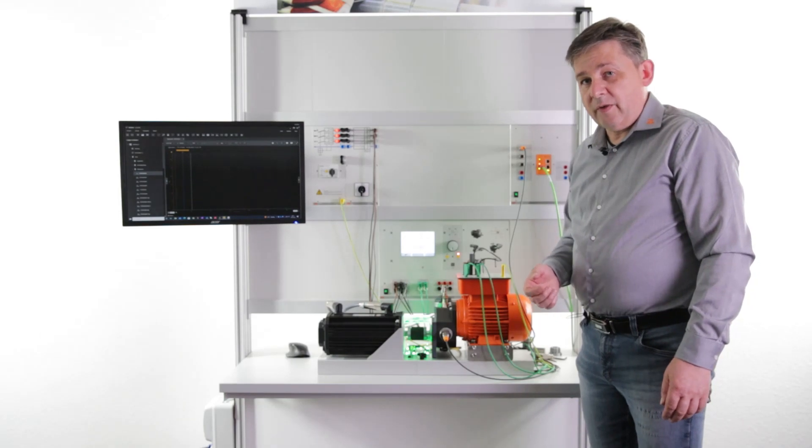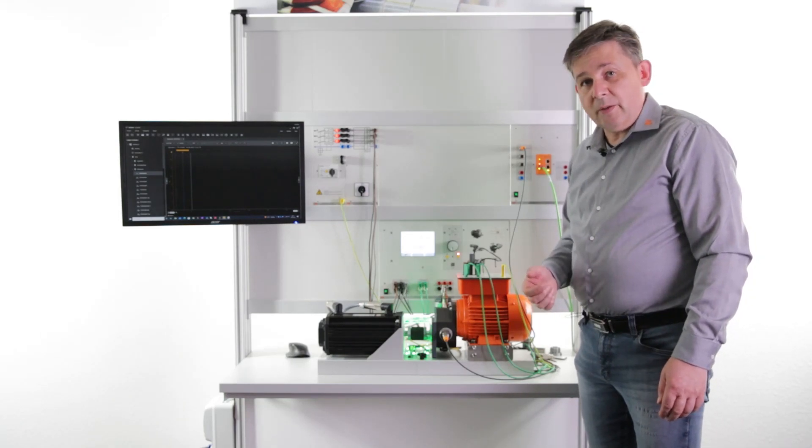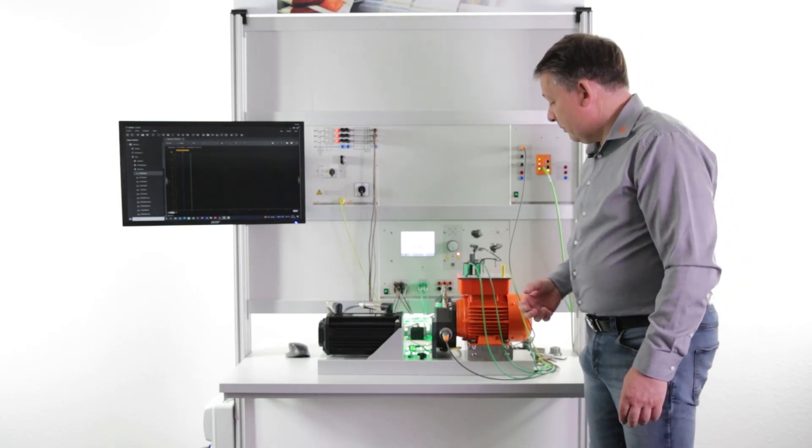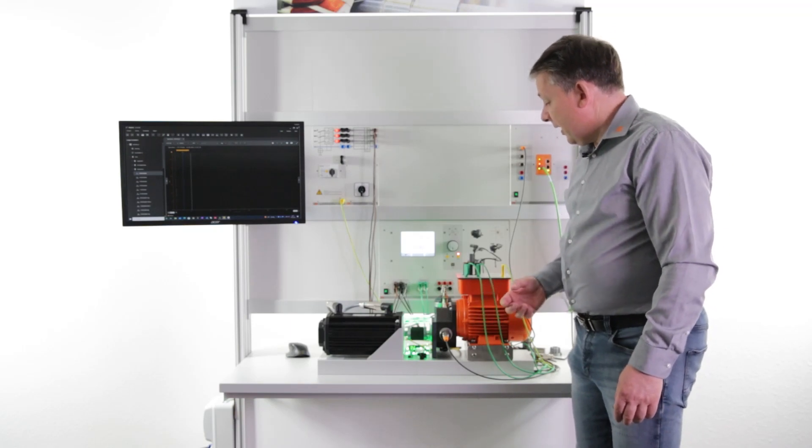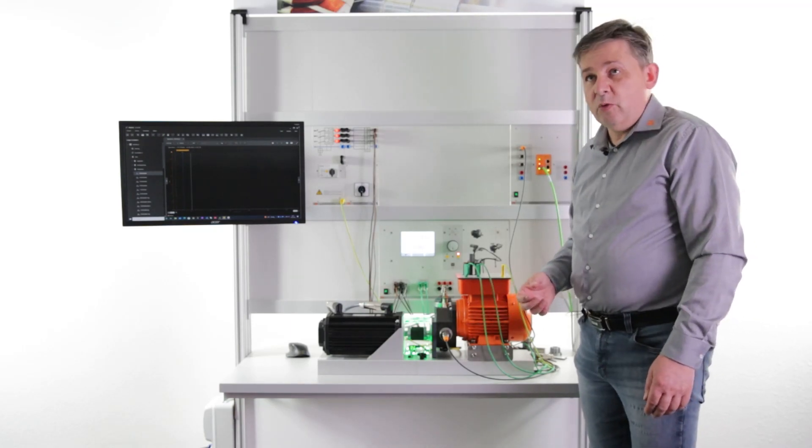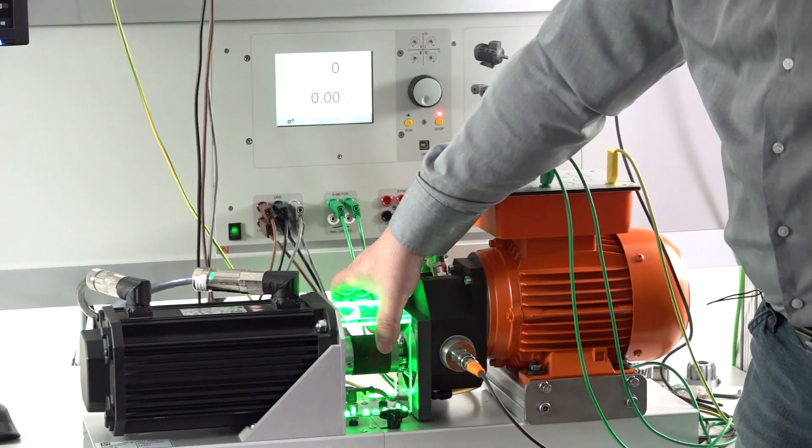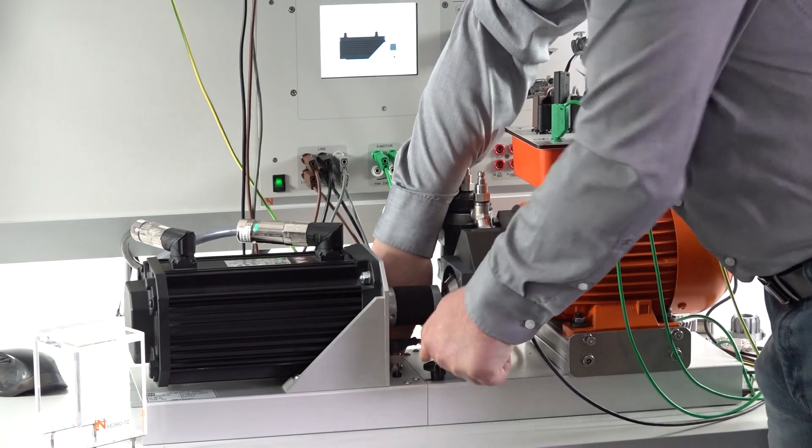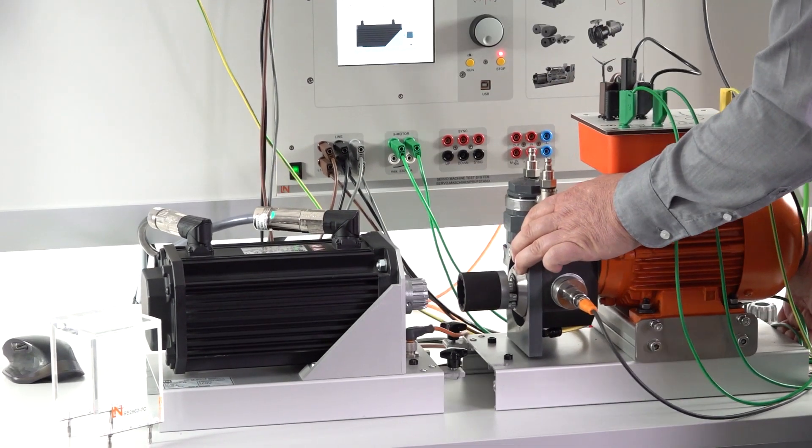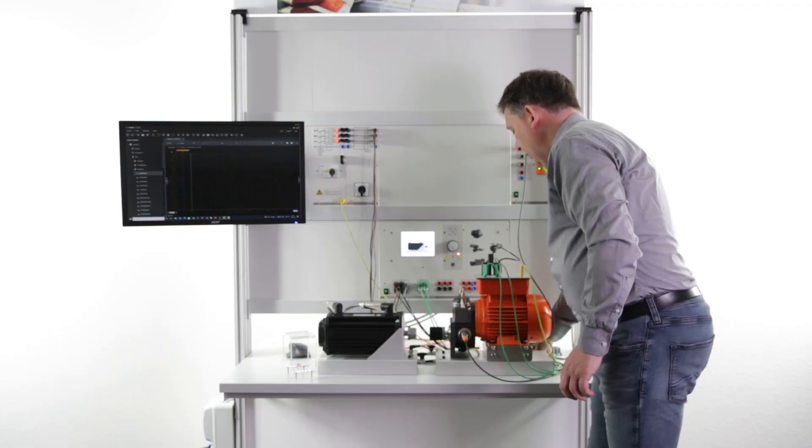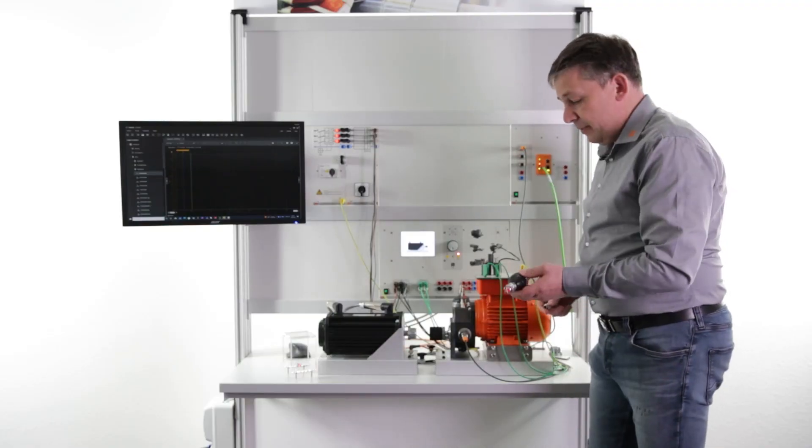If we are looking for failures with gearbox damages or bearing damages, we have to dismount the shaft. And before we do that, we have to remove the oil. Let me show you how easy that is working. So first I will remove our machine test system, use a special pump and the valve.